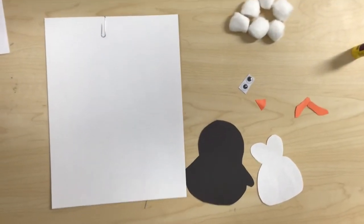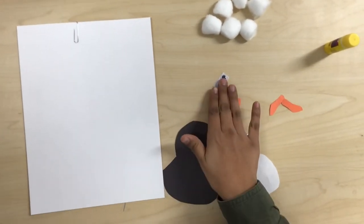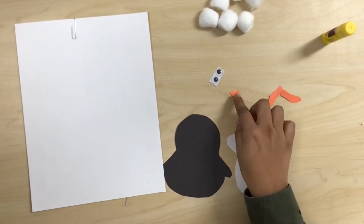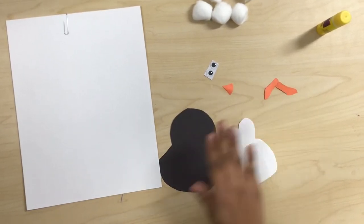The materials that we're going to be using for this activity are cotton balls, white construction paper, googly eyes, orange beak cut out, and body penguin cut out.